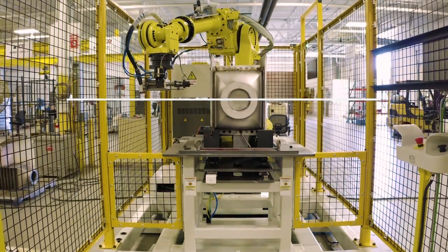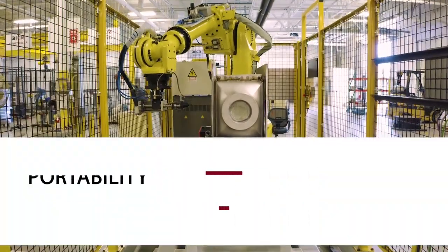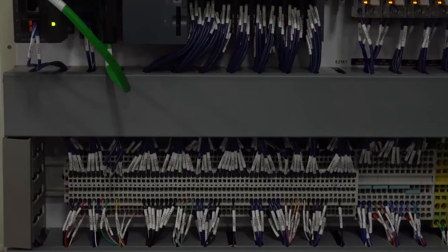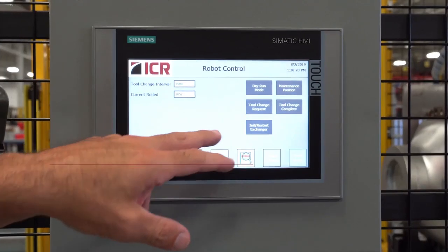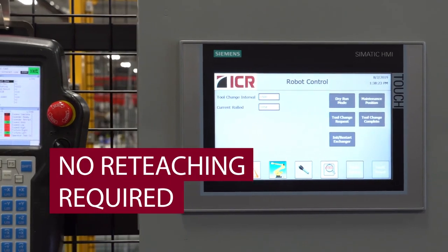The whole system is on one common base, so it's easy to pick up and move to wherever you need in your plant. No reteaching of points is needed from the time it leaves here until it hits the customer's floor. Everything is the same here as it is there.